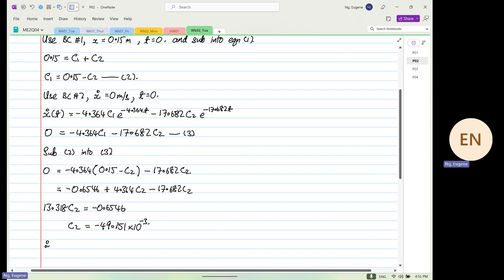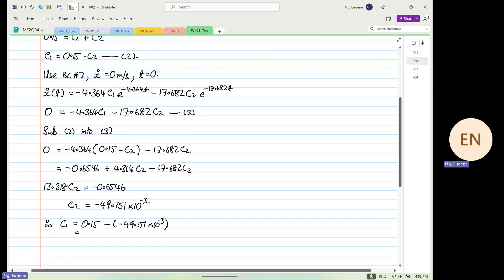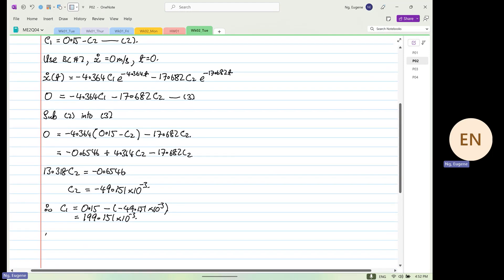So therefore c1 will be equal to 0.15 minus a minus again, 49.151 times 10 to the power minus 3. So this will be equal to 0.15 plus 49.151 times 10 to the power minus 3, which equals 199.151 times 10 to the power minus 3.